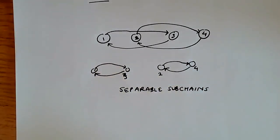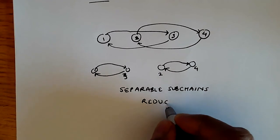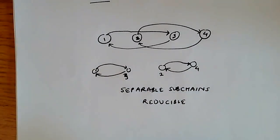Note that a stochastic process which has separable subchains is automatically reducible, because we cannot communicate between these two states in a finite number of steps.